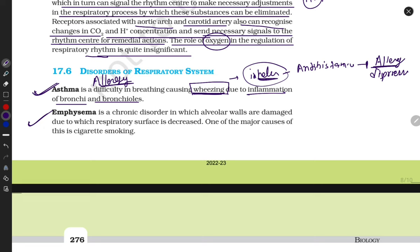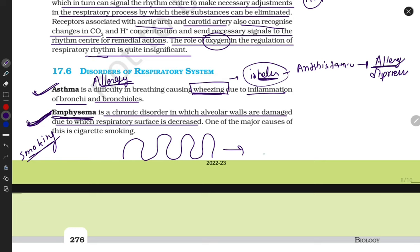Emphysema is found in persons who smoke more. Emphysema is a chronic disorder in which alveolar walls are damaged. Due to this, respiratory surface decreases. Before smoking their respiratory surface was larger, after smoking it becomes smaller. Look at here, one of the major reasons is cigarette smoking.